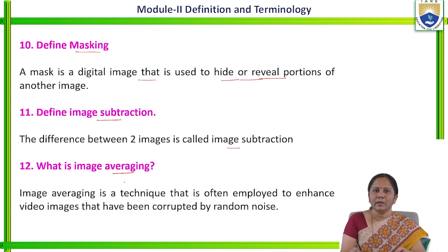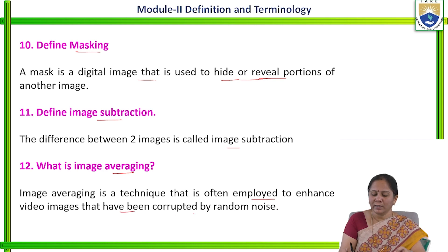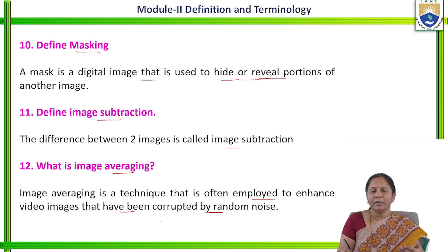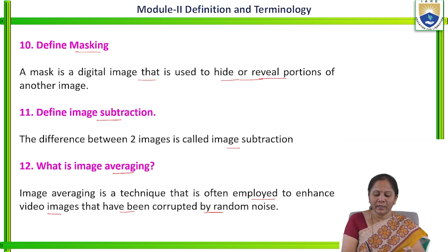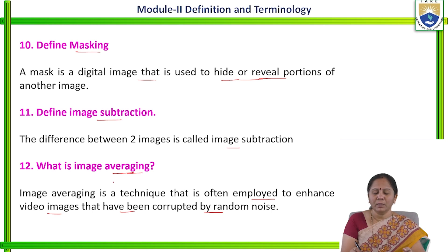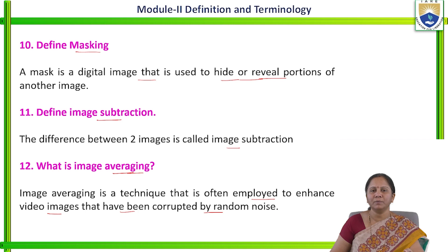What is image averaging? Image averaging is a technique that is often employed to enhance the video images that have been corrupted by random noise. If any image is having some noise — for example, any video image is having some noise — in order to enhance that, we can perform image averaging. This concept is used for image enhancement.